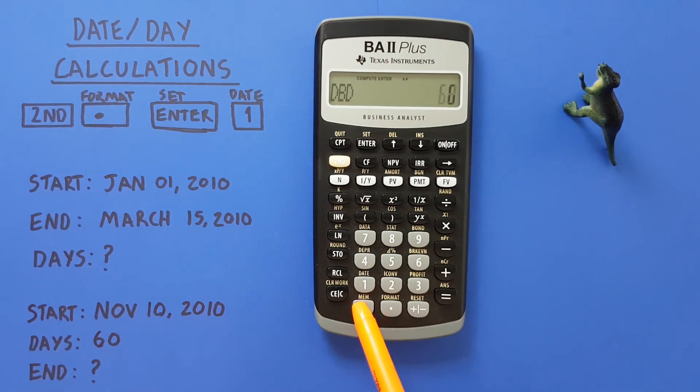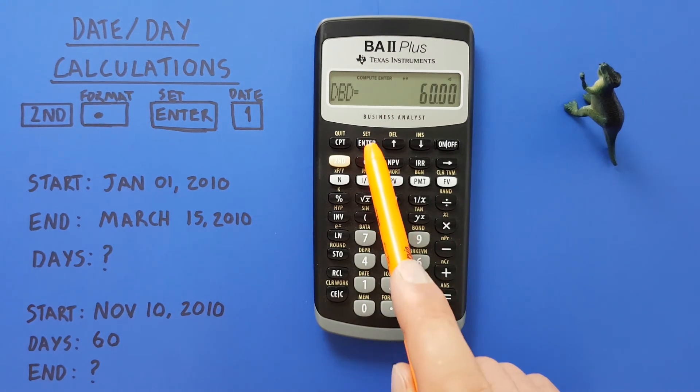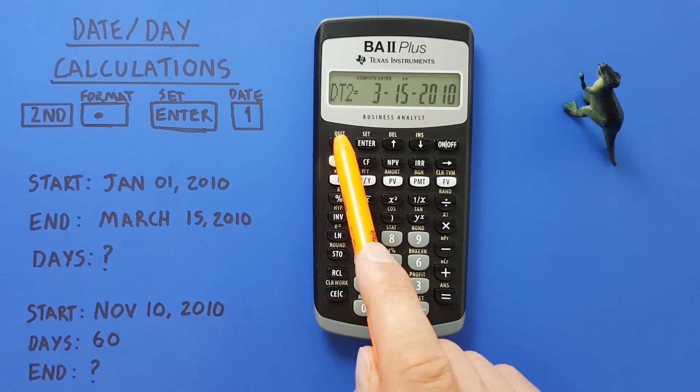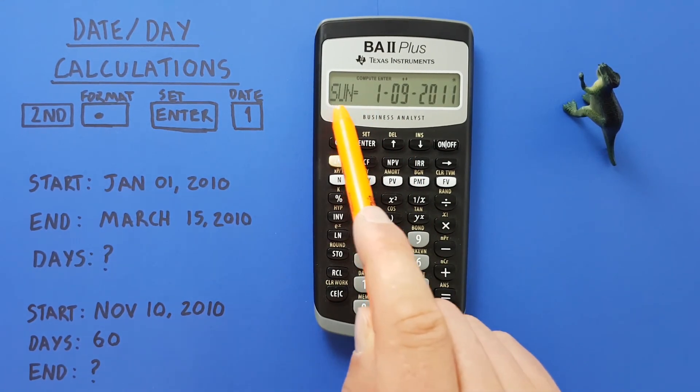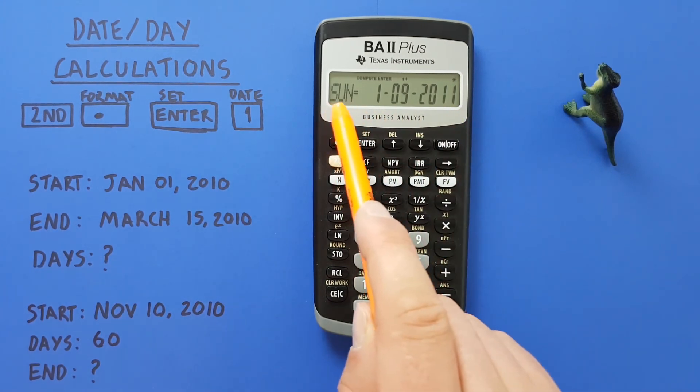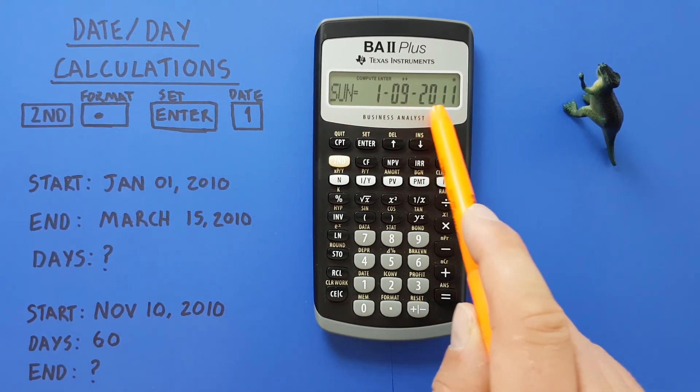If we scroll back up to our second date or end date and press compute, it'll solve for us and we see that our project is due Sunday, January 9th, 2011.